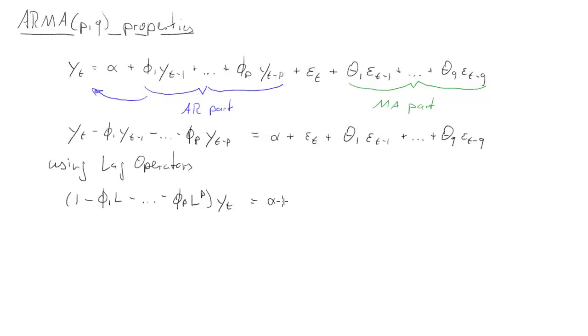Then the constant, and then we use lag operators on the epsilons as well, all the way up to theta_q L to the q, and then all of that times epsilon_t. We haven't changed anything, just all of this is written in terms of lag operators. Now we give this whole polynomial just a short name, we call that phi(L), all this parenthesis is just going to be represented short by phi(L).